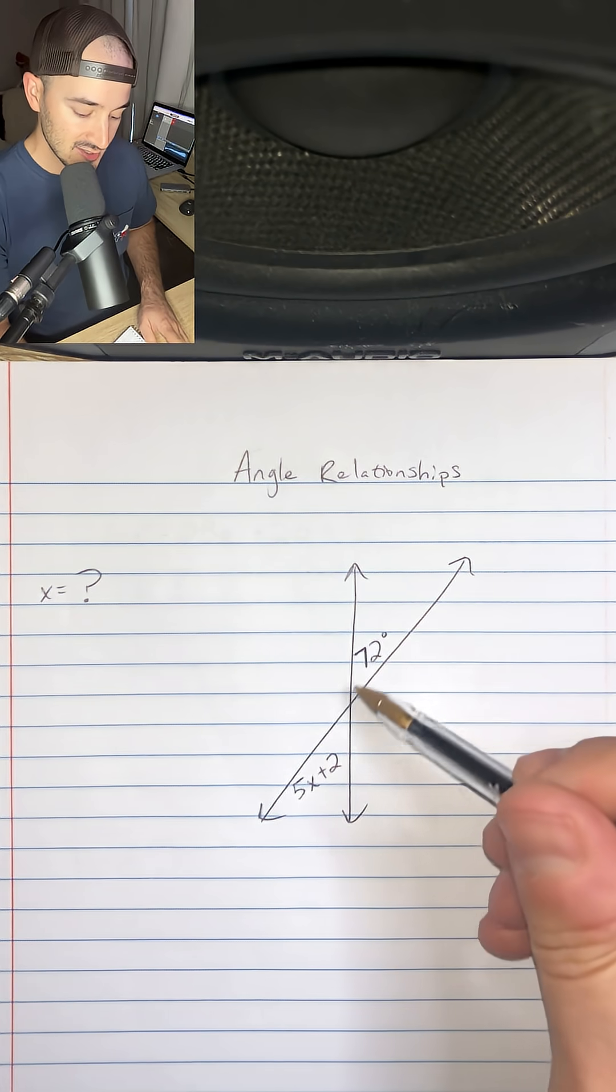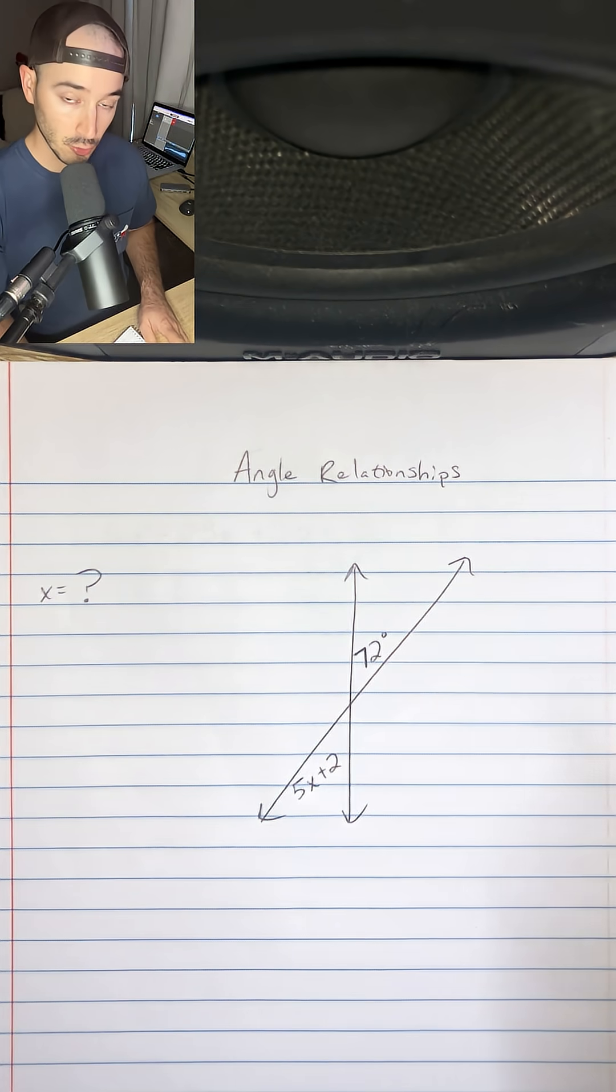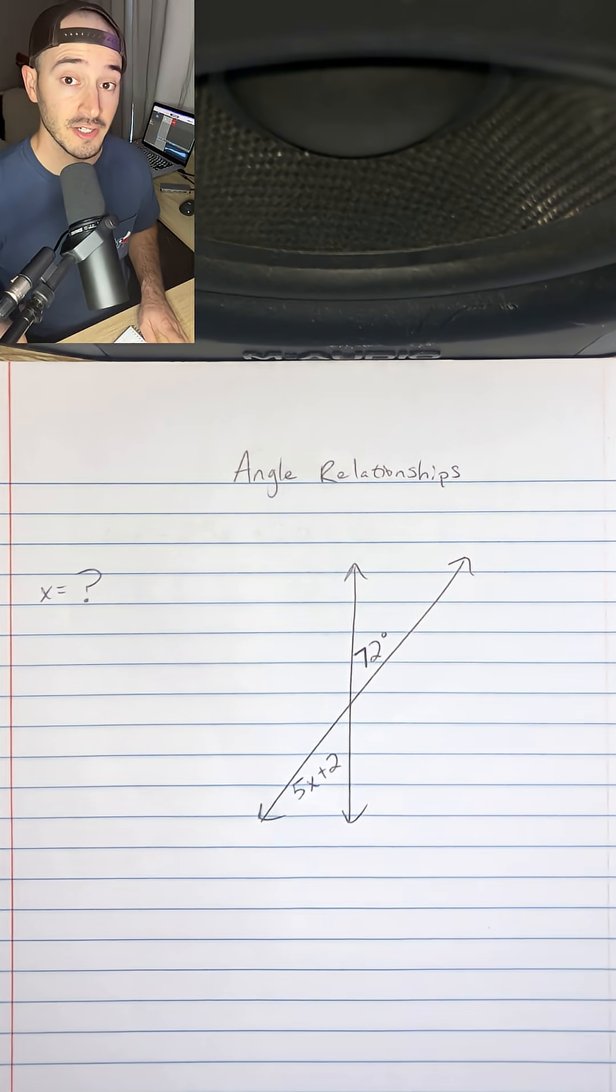Now these two angles are opposite from each other, so we know that they're equal or congruent and they're actually called vertical angles. These are called vertical angles, but the important thing is that they're equal.